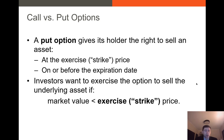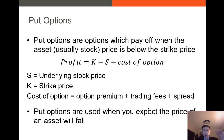A put option gives its holder the right to sell an asset at the strike price on or before the expiration date. You would generally want to buy a put option if you expected the market price of the underlying asset to be below the strike price. The profit structure for a put option is: strike price minus underlying stock price minus any cost of the option, which is mostly the premium.